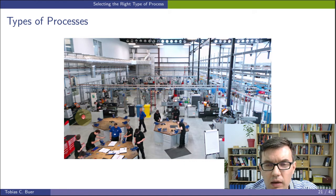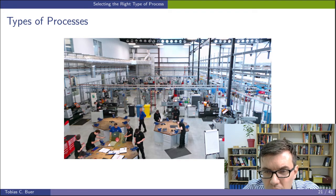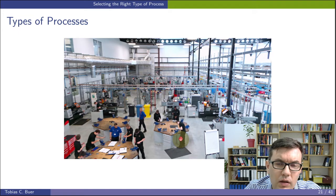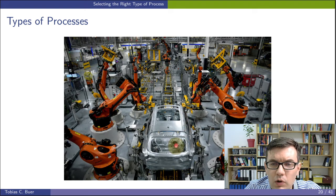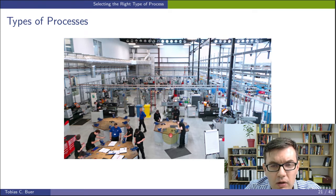Here is another example of a manufacturing process. You see several workers in black shirts, some in blue shirts — perhaps supervisors — performing tasks on some machines. In contrast to the automotive example where the product moves along a production line, in this example we have individual workstations and the product has to be manually carried from one workstation to another.